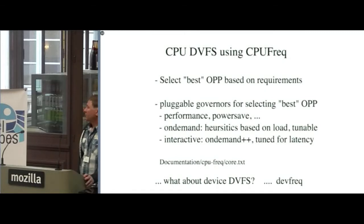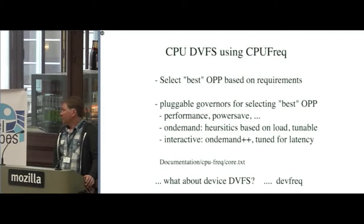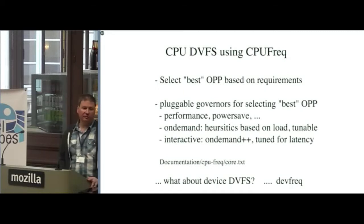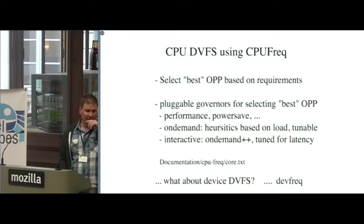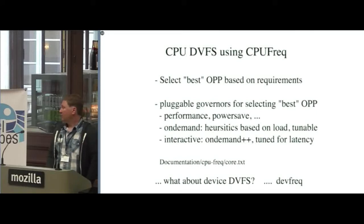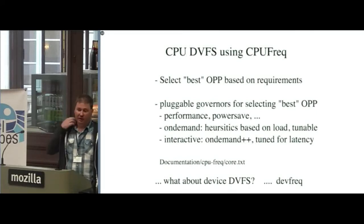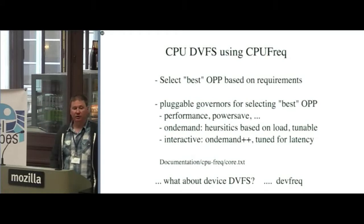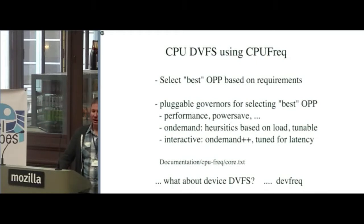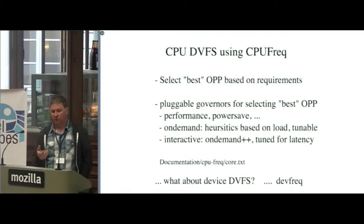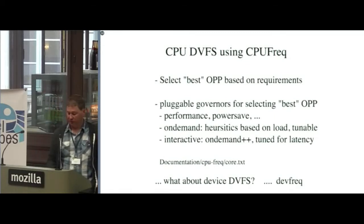There's another governor that's not upstream but widely used in Android called interactive. It's a lot like on-demand in that it looks at the load average and various heuristics, but it has a key difference: it takes certain input events, like touchscreen events, and immediately boosts the frequency to the highest level so that when you start touching your device, you don't have latency. On-demand is notoriously bad for this because after your device has been idle for a while, it takes a little while for that governor to ramp up. Interactive has a few hacks to look at input events and ramp up quickly so the user experience on interactive devices is more pleasant.